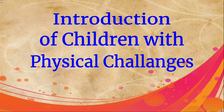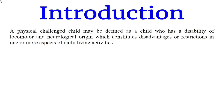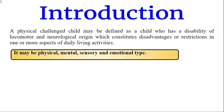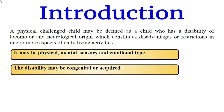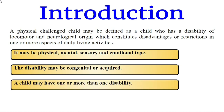A physically challenged child may be defined as a child who has a disability of locomotor and neurological origin. Locomotor disability restricts limb movement like bones and joint movement, and neurological disorder is a disability related to the nervous system. A physically challenged child may have locomotor or neurological disability, which constitutes disadvantages or restrictions in one or more aspects of daily living activities. The disability may be congenital — present by birth — or acquired during life.